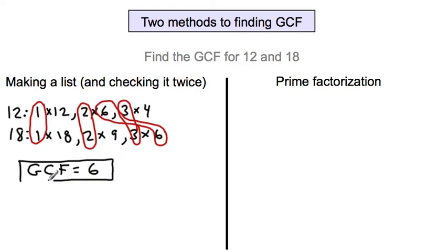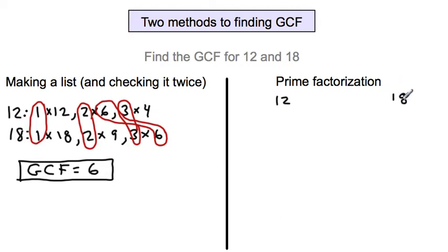We're going to get the same answer through prime factorization, and you'll see it takes up slightly more space, but you have to write a little bit less factors, so I prefer this one — it's also a little bit neater. So we're going to find the prime factorization of 12 and the prime factorization of 18, then list those prime factors below, just the prime factors, and I'll show you it's pretty simple to find the greatest common factor.